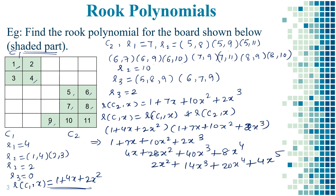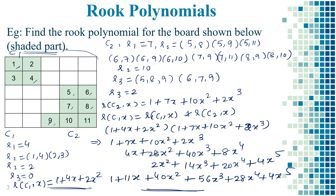By simplification we get: 1 plus (7+4)=11x, plus (10+28+2)=40x squared, plus (2+40+14)=56x cubed, plus (8+20)=28x to the 4th, plus 4x to the 5th. So the rook polynomial for the entire board, combining disjoint subboards C1 and C2, is 1 plus 11x plus 40x squared plus 56x cubed plus 28x to the 4th plus 4x to the 5th. This is the final rook polynomial for the given board. Thank you.